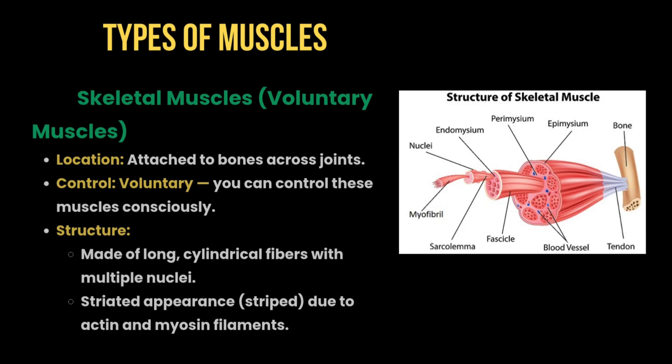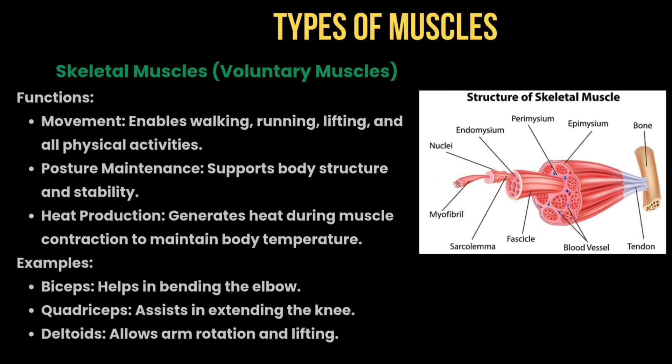The first type is skeletal muscle, otherwise called voluntary muscle. It is attached to the bones across the joints, and we can control these muscles consciously. The structure is a long cylindrical fiber with multiple nuclei and a striated appearance. Its functions include enabling us to walk, run, lift, and perform all physical activities.